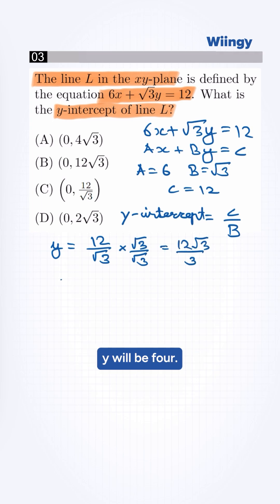Simplifying this, y will be 4 root 3. So in the y-intercept, x is always 0. So our point will be 0 comma 4 root 3. So our correct option will be a.